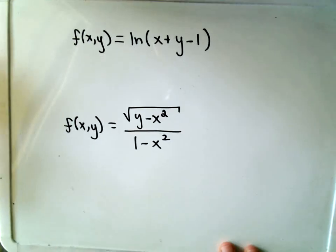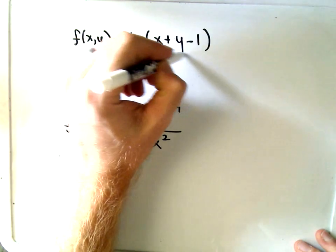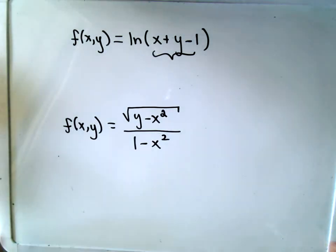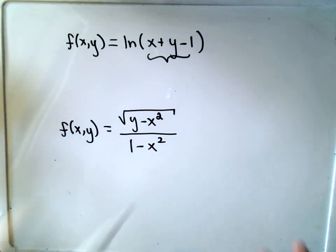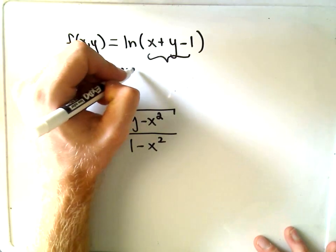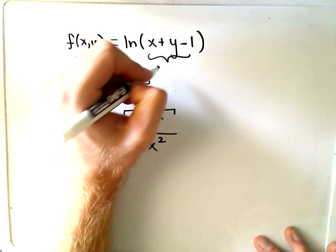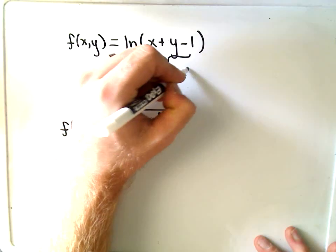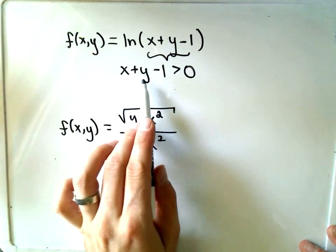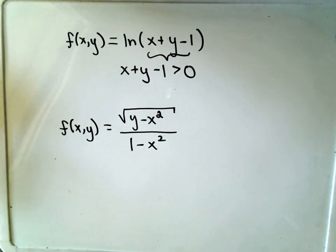Pretty straightforward, the same thing as normal when you do domain problems. So in the first one here, the natural logarithm of x plus y minus 1. What's the restriction on a natural logarithm? Well, basically whatever's on the inside of a natural logarithm has to be something that's positive. So our domain will be the set of x and y-coordinates that satisfy this relationship, x plus y minus 1 greater than 0.